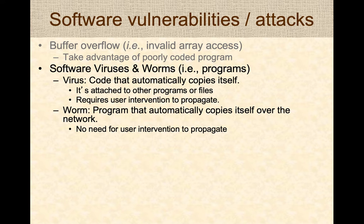Software vulnerabilities include viruses and worms. A virus is a malicious program that can automatically copy itself, but requires some user intervention — the user has to open a program, double-click a link, or run a program. Worms, on the other hand, are programs that can automatically propagate themselves over a network without user intervention. Once on a network, they propagate across it by themselves.